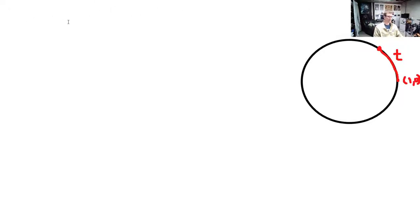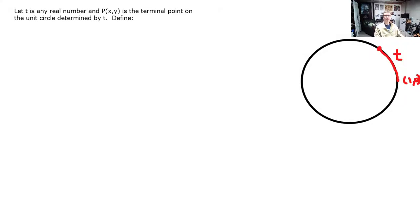Let's define some different things here. Let t be any real number, and let P(x, y) be the terminal point on the unit circle determined by t. So this is P with some coordinates x, y.